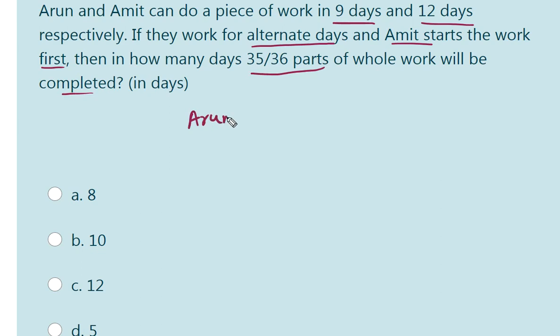Let us take Arun's work. Arun can do a piece of work in 9 days. So, his 1 day work will be 1 by 9. Amit can do a piece of work in 12 days. His 1 day work will be 1 by 12.